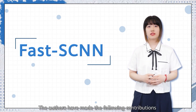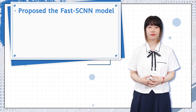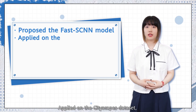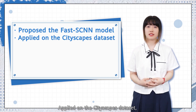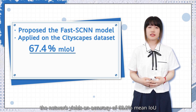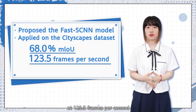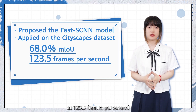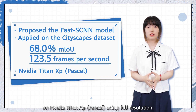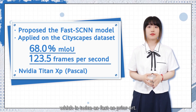The authors have made the following contributions through this paper. They propose the FAST-SCNN model. Applied on the CityScape dataset, the network yields an accuracy of 68% mean IOU at 123.5 frames per second on NVIDIA TITAN XP PASCAL using full resolution, which is twice as fast as prior art.